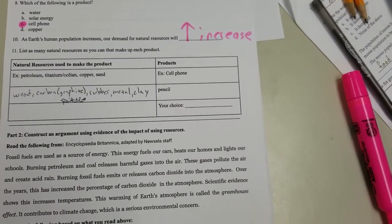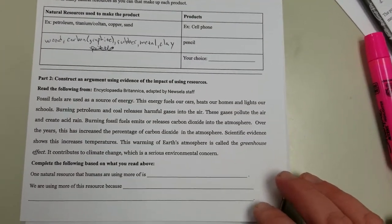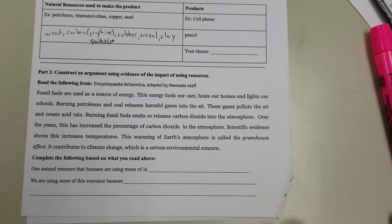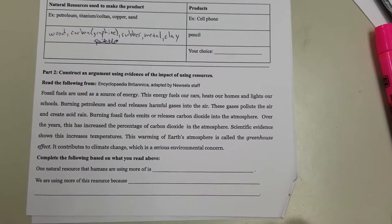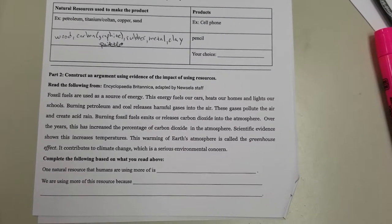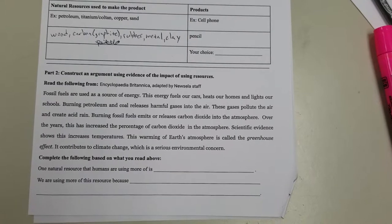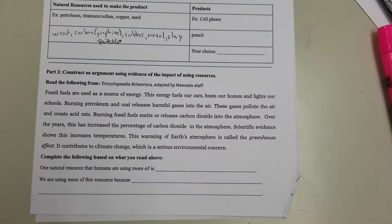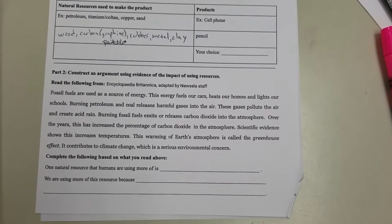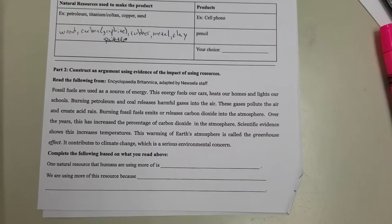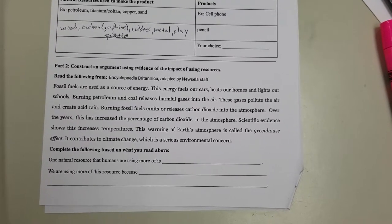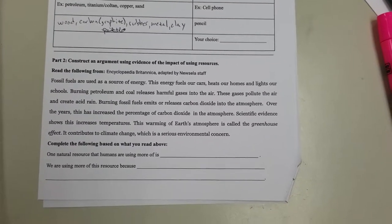Read the following from Encyclopedia Britannica adapted by Newsela staff: Fossil fuels are used as a source of energy. This energy fuels our cars, heats our homes, and lights our schools. Burning petroleum and coal releases harmful gases into the air. These pollute the air and create acid rain. Burning fossil fuels emits or releases carbon dioxide into the atmosphere. Over the years, this has increased the percentage of carbon dioxide in the atmosphere. Scientific evidence shows this increases temperatures. This warming of Earth's atmosphere is called the greenhouse effect. It contributes to climate change, which is a serious environmental concern.